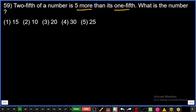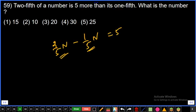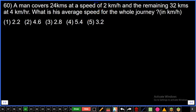Question number 59: Two-fifth of a number is 5 more than its one-fifth. What is the number? Two-fifth of the number minus one-fifth of the number equals 5. The difference is 5, which means one-fifth of the number equals 5. Therefore, the number equals 5 into 5, which is 25. Fifth option.